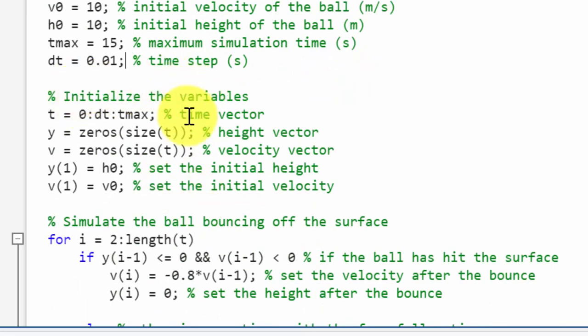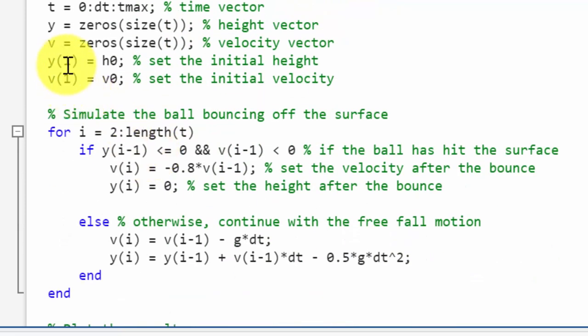Next I am going to initialize the variables. t equals from 0 to maximum time with dt intervals. From 0 to 15 I am creating a time vector with a gap of 0.01. Next I am creating a height vector with zeros for the size of t. Similarly I have created the velocity vector with zeros. Next y(1), that is the initial height, we have already defined as h0, and the initial velocity is v0.